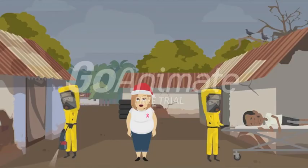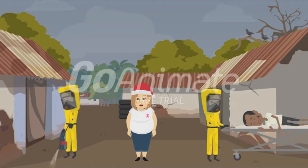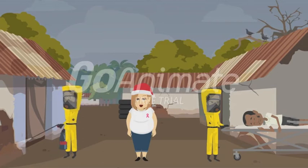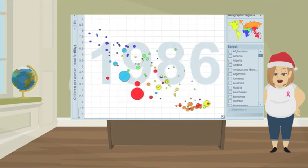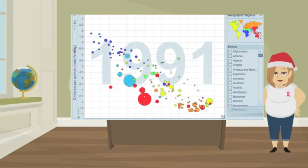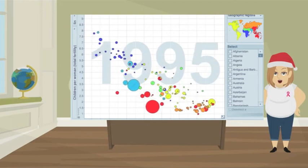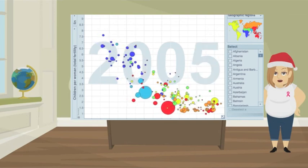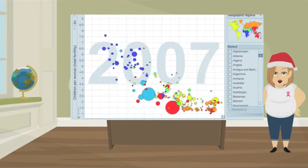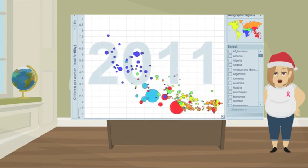The next graph we are going to look at shows the relationship between children per woman and the HDI indicator. The HDI stands for Human Development Index and shows health, life expectancy, wealth, and education. As we can see in this graph, less children per woman means a higher HDI. Countries that started to have less children per woman have also started to have a higher HDI, which means better health, life expectancy, wealth, and education.